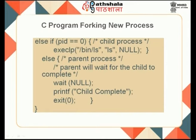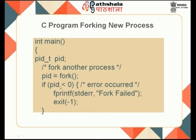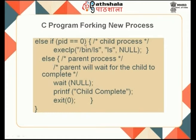The parent process, when it comes to the PID check, finds PID is not negative and not equal to 0 — since fork returns the child's process ID to the parent. So the parent skips the child's code block and executes the else part: it executes a wait, which waits for the child process to complete. Once the child exits, the parent prints 'child complete' and exits.